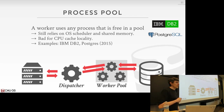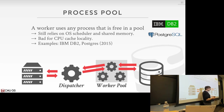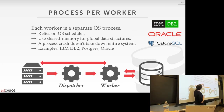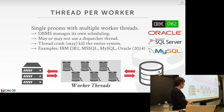Some high-end systems do work stealing — the dispatcher knows who's doing what, and if one worker has a long queue, it can take work from that worker and hand it to an idle one. The process pool approach is used by IBM DB2. Postgres, Oracle, and DB2 are all older systems from the 70s and 80s that use process-based models.